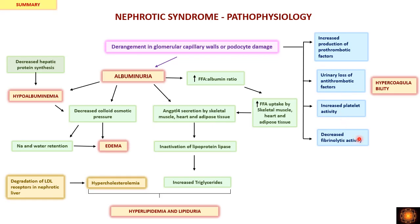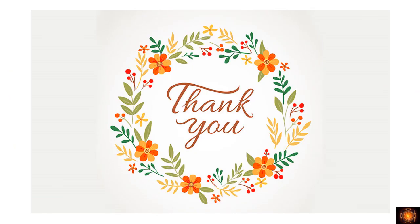To summarize, the key manifestations of nephrotic syndrome are albuminuria, hypoalbuminemia, edema, hyperlipidemia and lipiduria, and hypercoagulability. Thank you for listening.